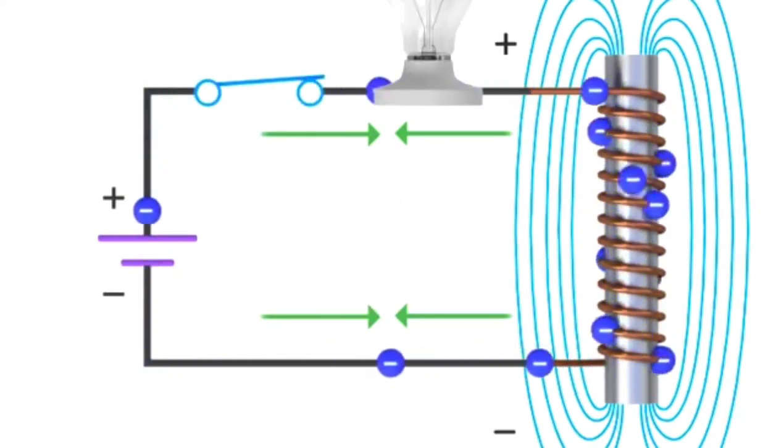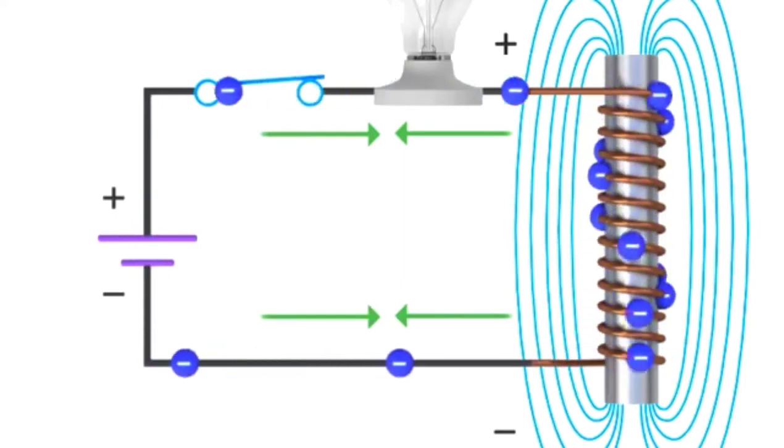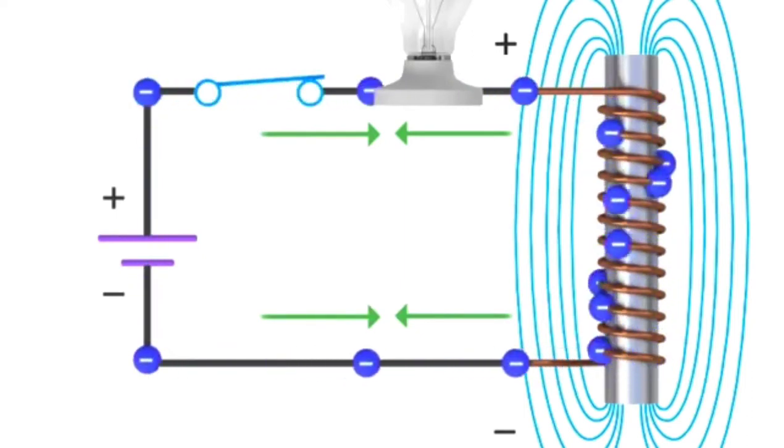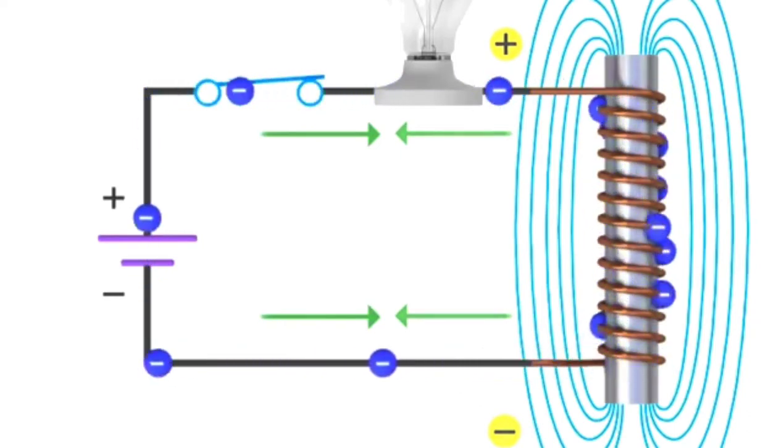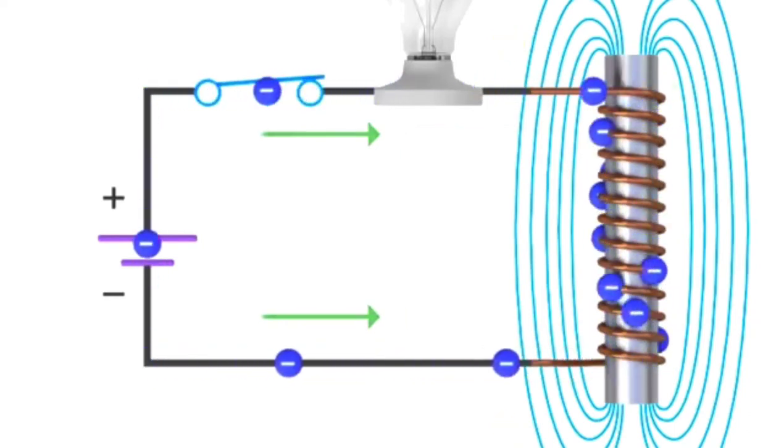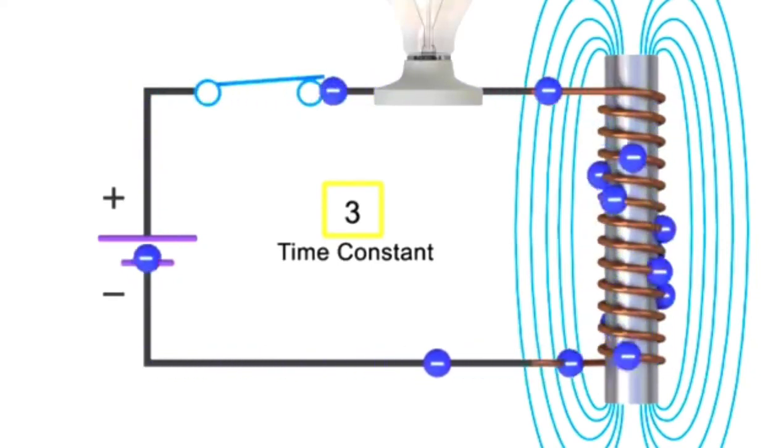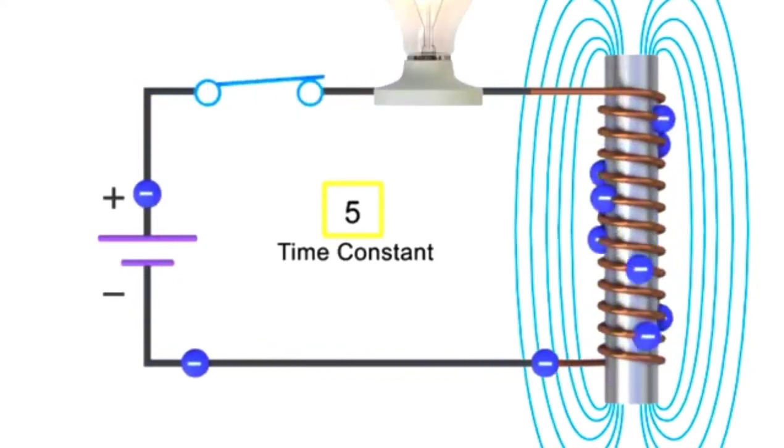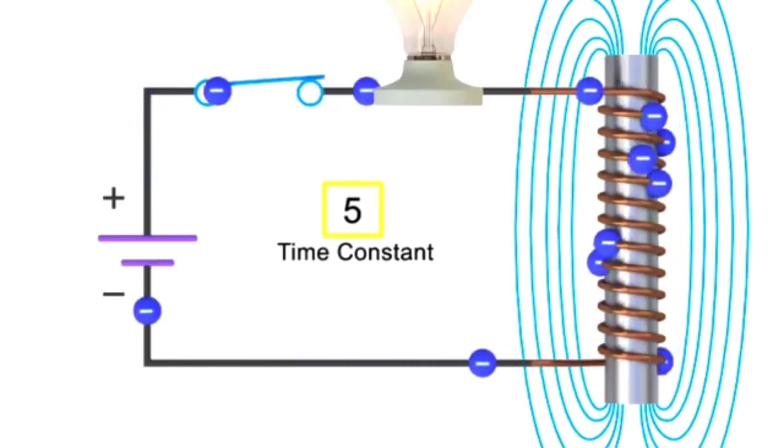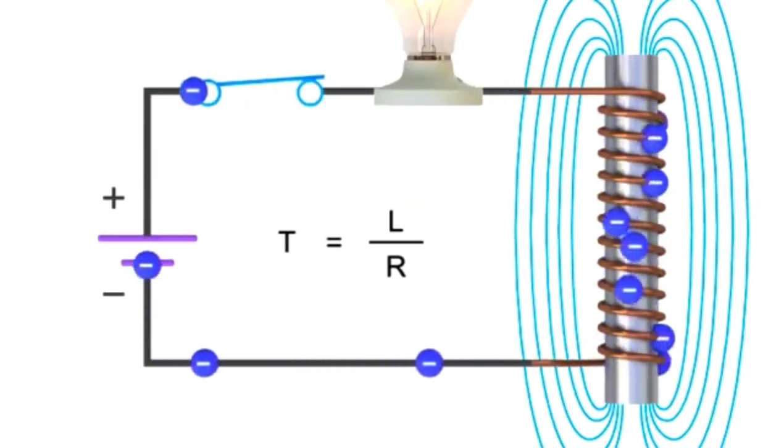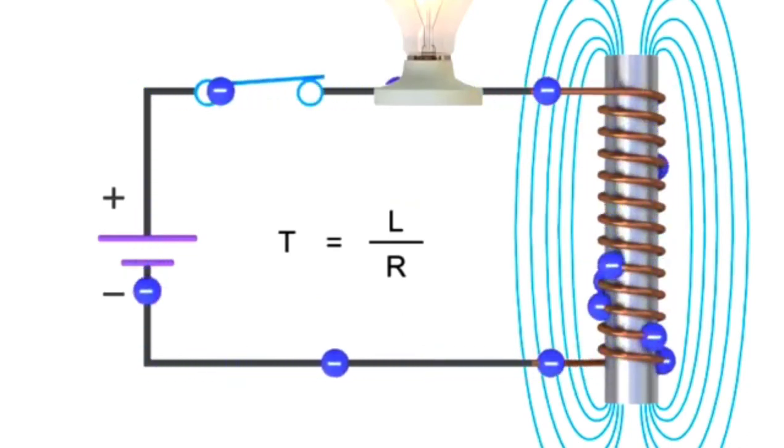However, once the electromagnetic field stops expanding based on the level of changing current, the flux will no longer generate an opposing voltage in the circuit. The current will continue to flow and reach its maximum value after 5 time constants, or 5T, where T is equal to L divided by R. The light bulb will then be at its maximum brightness.